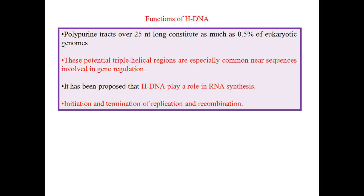These potential triple helical regions are especially common near sequences involved in gene regulation. It has been proposed that H-DNA plays a role in RNA synthesis, though much more research needs to be done on this topic. H-DNA can be found largely in common places where sequences are involved in gene regulation, most importantly in eukaryotic cells. H-DNA can also be found at the initiation and termination points of replication, and in recombination as well.